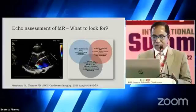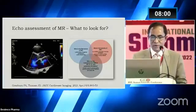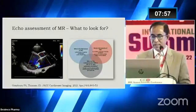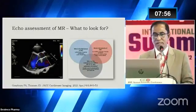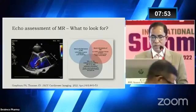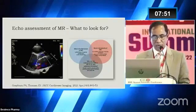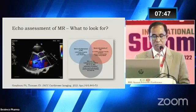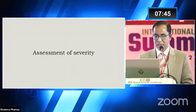Assuming we all know the basic anatomy and structure of the mitral valve apparatus, for echo assessment of mitral regurgitation we need to look at least three basic things: one is the severity of mitral regurgitation, another is the mechanism of mitral regurgitation, and the third is its hemodynamic impact. This is very important for further management.